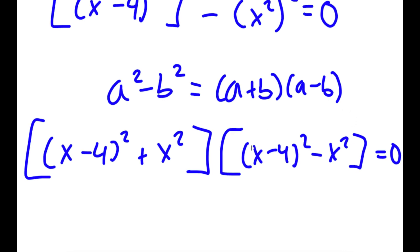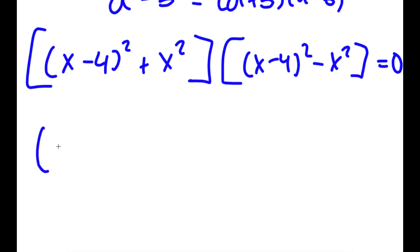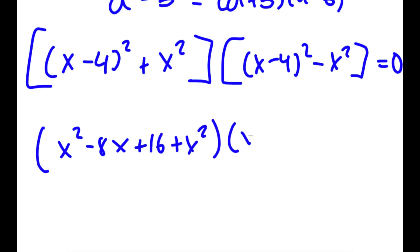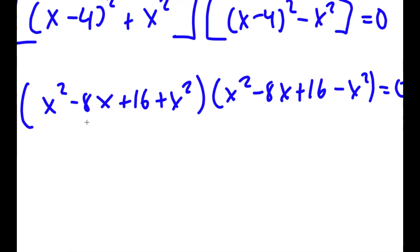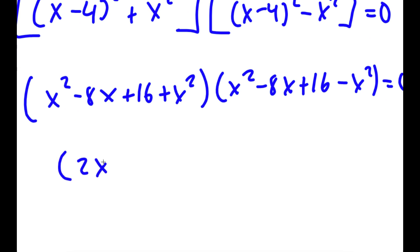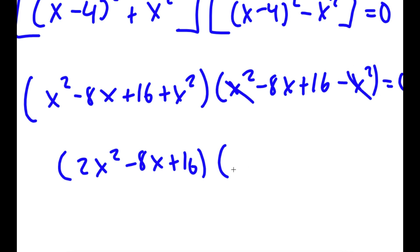Now, if I expand this, I get x squared minus 8x plus 16 plus x squared, times x squared minus 8x plus 16 minus x squared, is equal to 0. So this gives me 2x squared minus 8x plus 16, times negative 8x plus 16, is equal to 0.